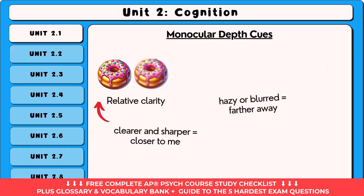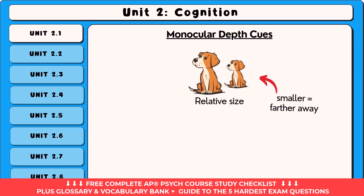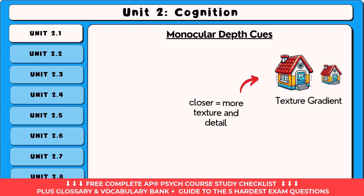Relative clarity is the tendency for clearer and sharper objects to appear closer, while hazy or blurred objects appear farther away. Relative size is the perception that when two objects are known to be of similar size, the smaller one appears farther away. Texture gradient is the gradual decrease in detail and texture as an object's surface recedes into the distance, creating a sense of depth.